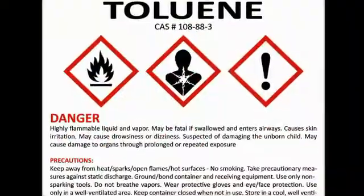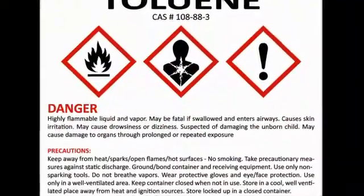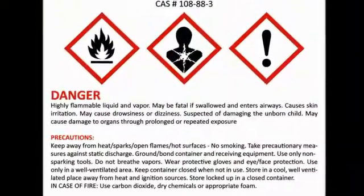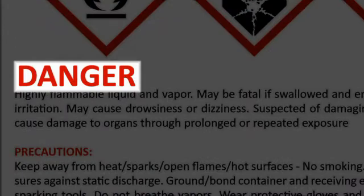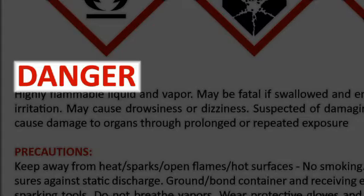GHS labels also contain other indicators of chemical hazards. A signal word, such as warning or danger, is used to alert you to hazards and indicate their level of severity. Danger indicates a more severe hazard, but you should also pay attention to all warnings.